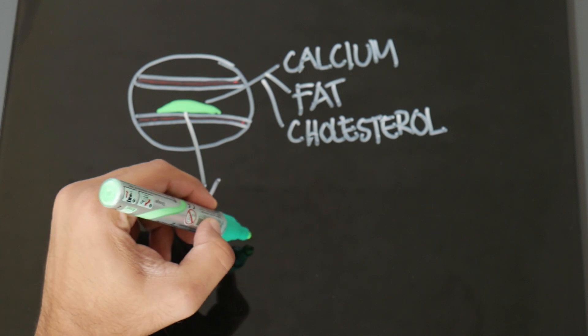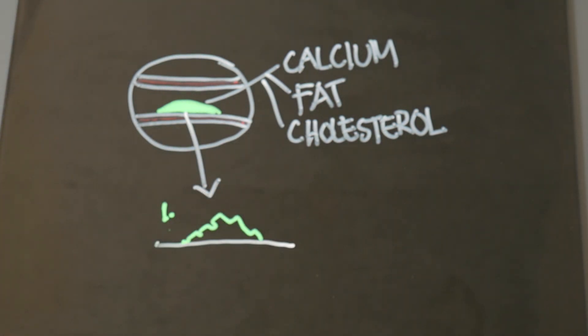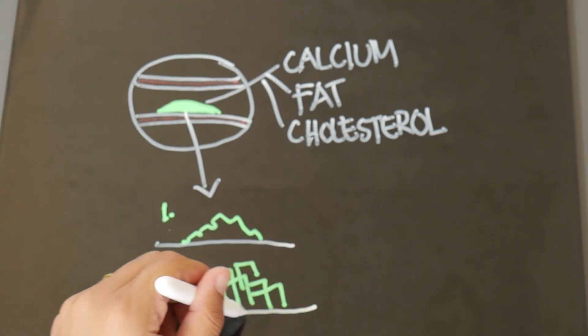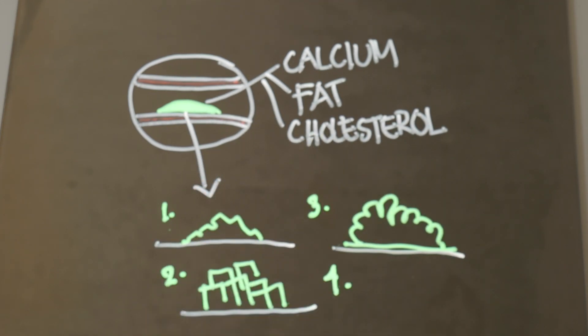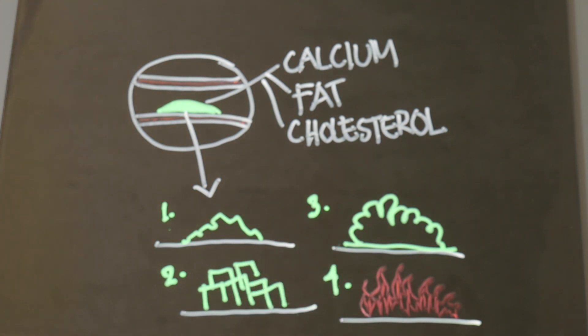The plaque can either be soft, the plaque can also be hardened or calcified, the plaque can also be chunky, and sometimes the plaque can also be inflamed. Whenever there is plaque there is a blockage that happens, and it's quite hard to imagine a plaque actually.